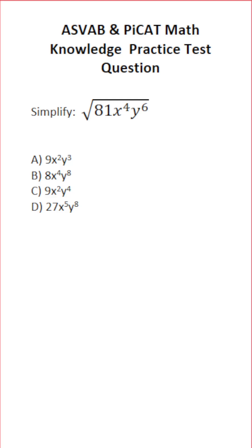This math knowledge practice test question for the ASVAB and ASVAB says: simplify the square root of 81 x to the 4th y to the 6th. You should know that the square root of 81 is 9, so all answer choices that don't start with 9 are therefore incorrect.